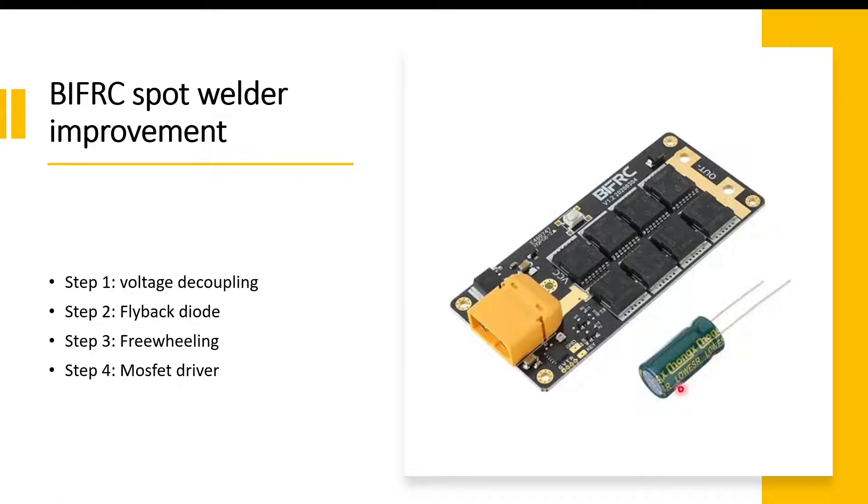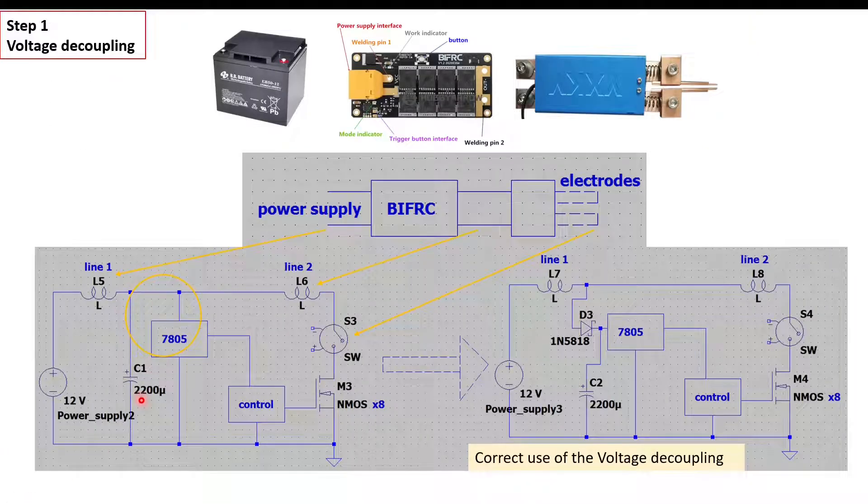As you can see, they provide this electrolytic capacitor to be soldered here. But if you solder there, when you have a first shot, the voltage can decrease. This voltage can decrease as well because it's directly connected to the ground, and the control circuit cannot provide a properly response to the gate because the voltage is decreased.